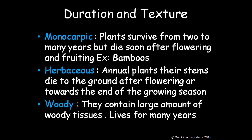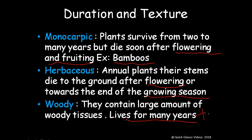Monocarp plants survive from two to many years but die soon after flowering and fruiting — for example, bamboo. Herbaceous plants: the stem dies to the ground after flowering or towards the end of the growing season. Woody plants contain a large amount of woody tissue and live for many years — for example, mango and neem trees are all woody.